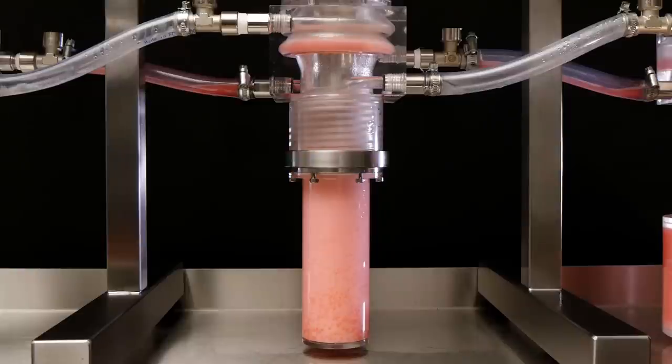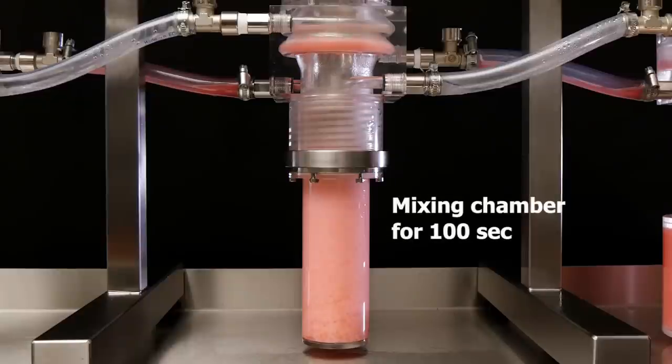On the middle centrifugal extractor, we feed the red organic phase from the left-hand centrifuge and the aqueous phase from the right-hand centrifuge. Both phases are mixed very intensively inside the mixing zone. Some applications are mass transfer reduced systems and require mixing times longer than 5 seconds. We added a bigger mixing zone to allow for a mixing time of 100 seconds.